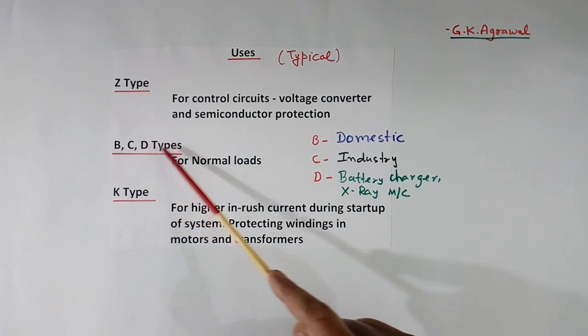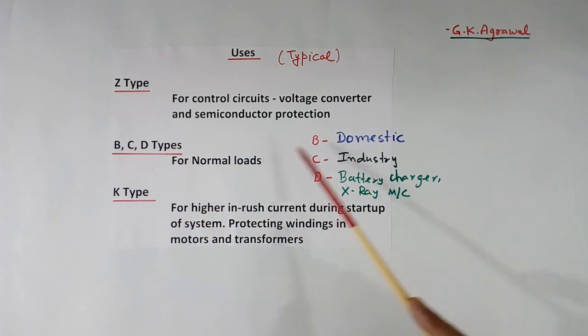Then B, C, D types are for normal loads. B is used for domestic purposes. C is for industry and for commercial use also. D is used for battery chargers and X-ray machines.